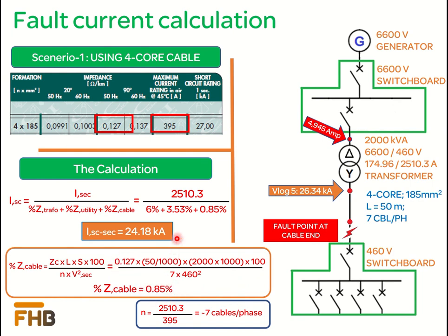Once the total short circuit impedance is calculated, then the short circuit current at the cable end is simply the ratio of rated transformer secondary current and the total short circuit impedance. In this case, rated secondary current is 2510.3 ampere and the total short circuit impedance is 10.38%. The value of short circuit current is found to be 24.18 kilo amperes.